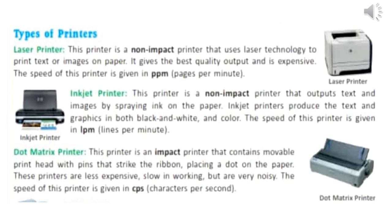Inkjet printer. This printer is a non-impact printer that outputs text and images by spraying ink on the paper. Inkjet printers produce text and graphics in both black and white and color. The speed of this printer is given in LPM, that means lines per minute, meaning the inkjet printer prints pages line by line.